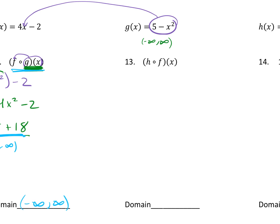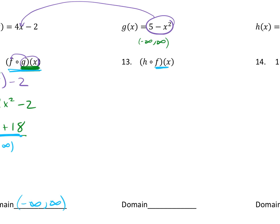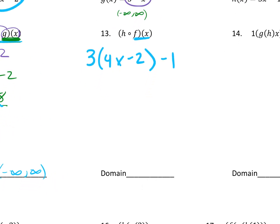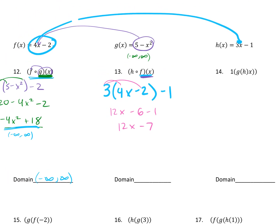For number 13, we find H of F of x. Plug F(x) = 4x minus 2 into H: 3(4x minus 2) minus 1. Distribute: 12x minus 6 minus 1, which gives 12x minus 7. The domain of F(x) is all real numbers, and the domain of the whole composition is also all real numbers.